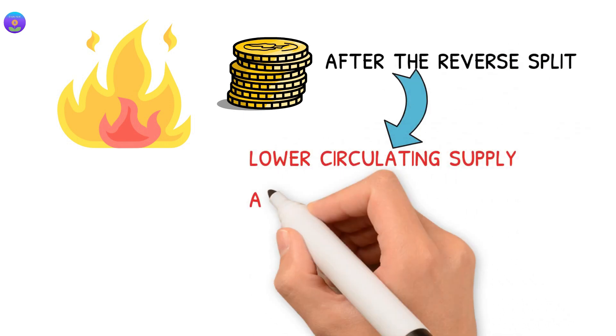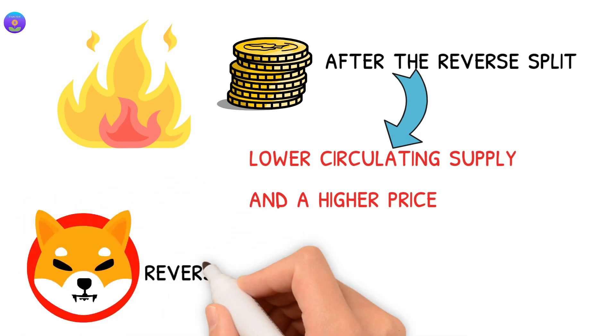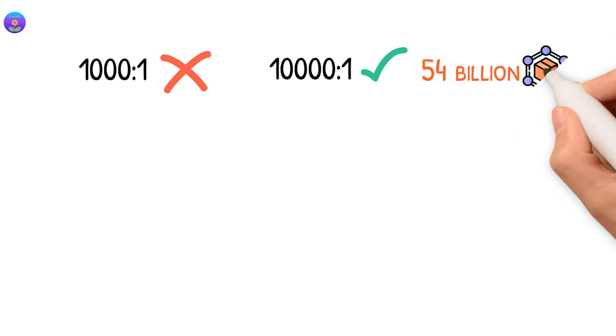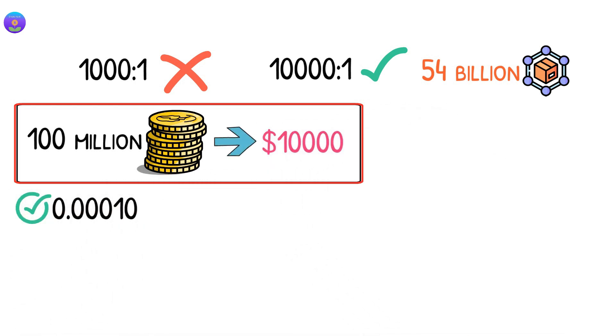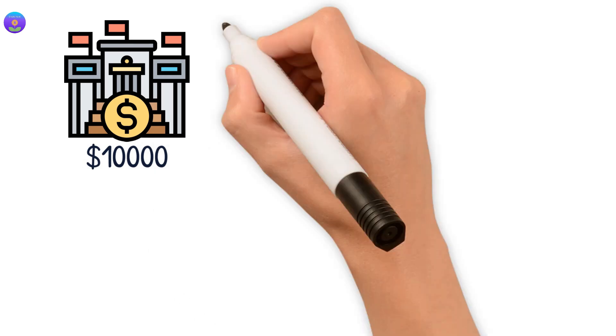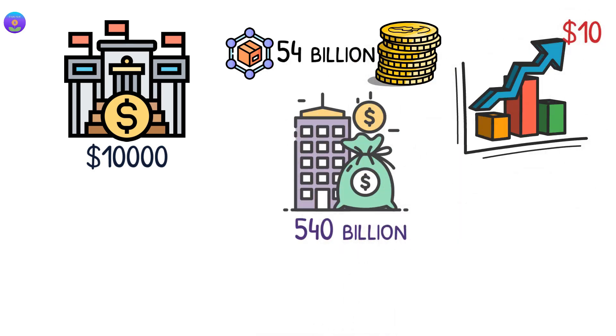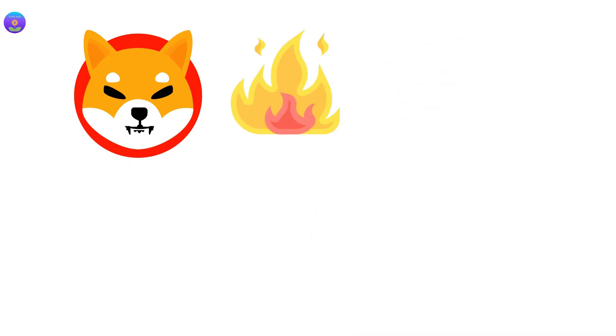Note that the team could burn more tokens after the reverse split, which will lead to a lower circulating supply and a higher price. The reverse split one thousand to one isn't the only option. The team may decide to reverse split the token to a higher ratio. So instead of one thousand to one, the team may decide to reverse split the token to ten thousand to one. This will give us fifty-four billion in the circulating supply. This means the one hundred million tokens that you bought at three zeros ten and worth ten thousand dollars now became ten thousand tokens at the one dollar price mark. Still, you reserve the value of ten thousand dollars. But since we have a lower supply of fifty-four billion tokens, the price could go to ten dollars with a market cap of five hundred and forty billion, then your ten thousand dollars becomes 100k.